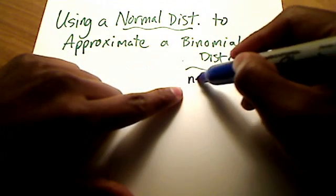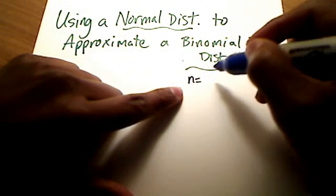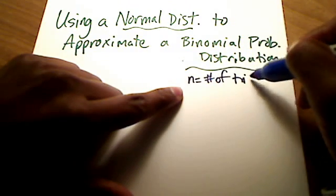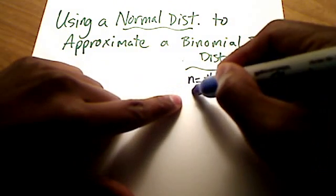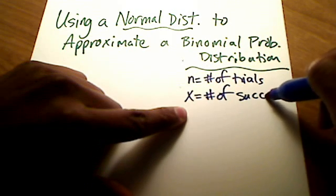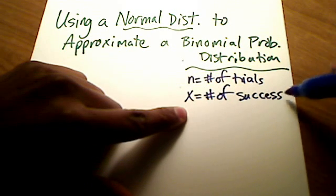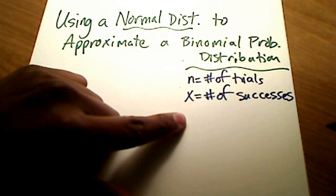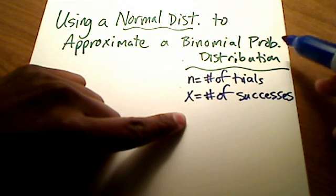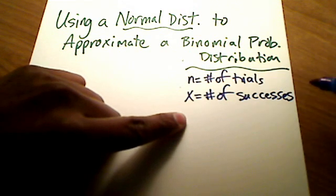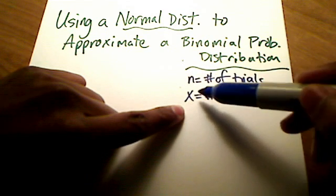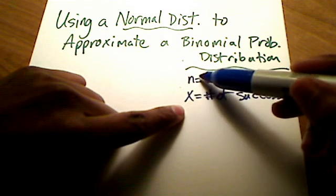Let me do a real quick recap of what I mean by binomial probability distribution. First of all, I have a number of trials — that's what little n is. I have an x, which is the number of successes given the number of trials n. And x cannot be any number greater than n, so x is restricted by n.